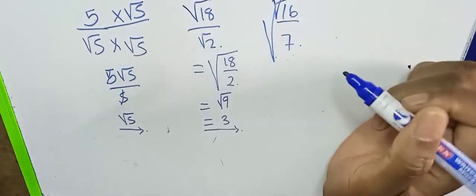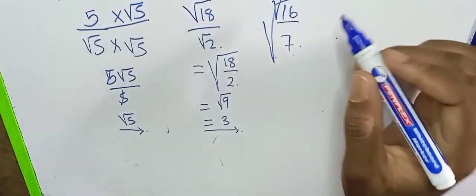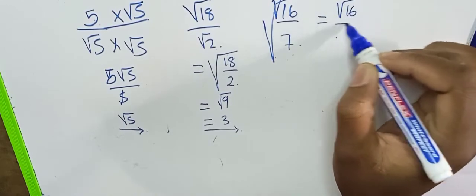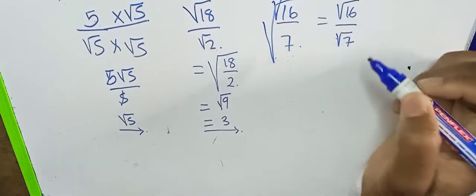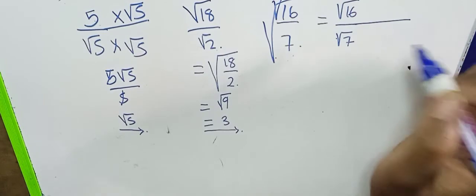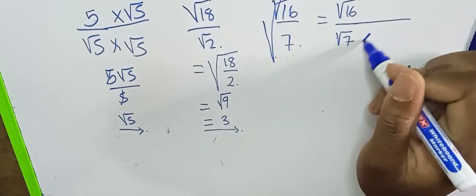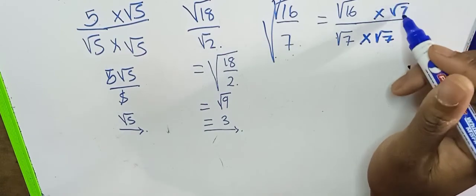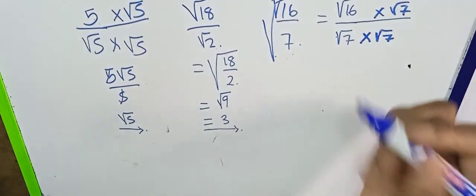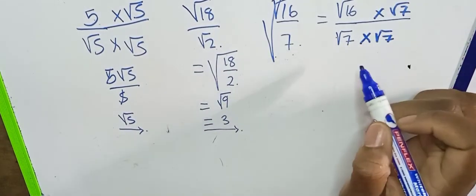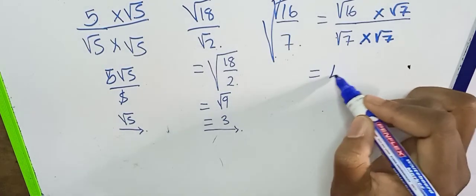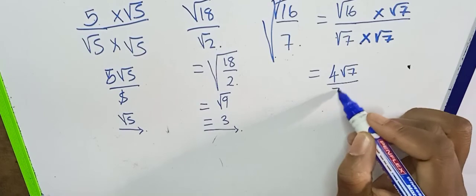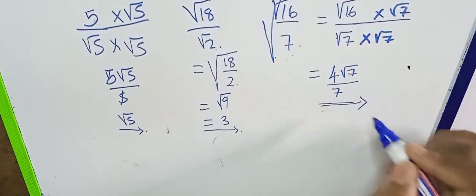What about root 16 over root 7? It's the same as root 16 over root 7. We don't want a surd on the denominator, so we multiply by root 7 on both the denominator and the numerator. We get root 16 times root 7, and root 16 equals 4.